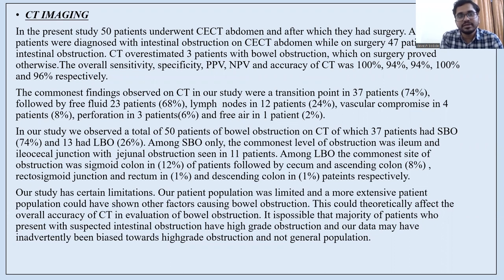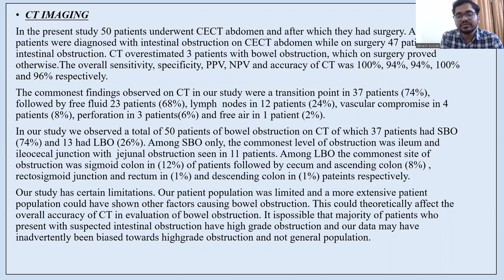While on surgery, 47 patients had confirmed intestinal obstruction. CT overestimated 3 patients with bowel obstruction, which on surgery proved otherwise. The overall sensitivity, specificity, positive predictive value, negative predictive value, and accuracy of CT was 100%, 94%, 94%, 100%, and 96% respectively. The commonest findings observed on CT were transition point in 37 patients, followed by free fluid in 23 patients, lymph nodes in 12 patients, vascular compromise in 4 patients, and perforation in 3 patients.